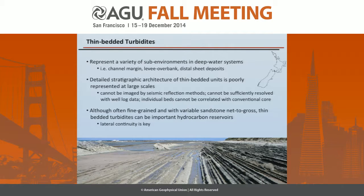So the outcrop offers really useful information. Another importance of these thin-bedded turbidites is that they can prove to be important hydrocarbon reservoirs, as long as we understand their lateral geometries and know that those are laterally continuous.